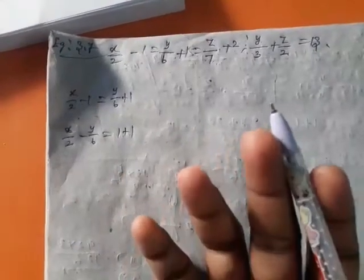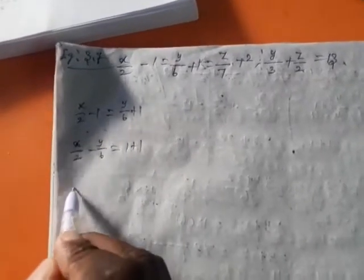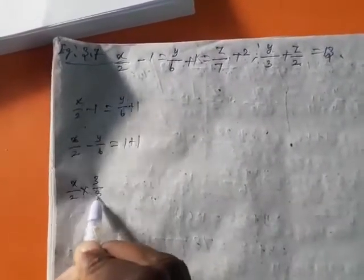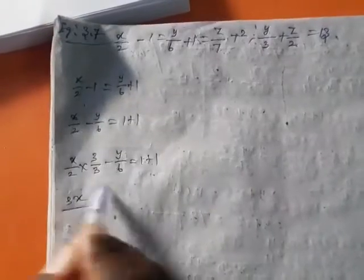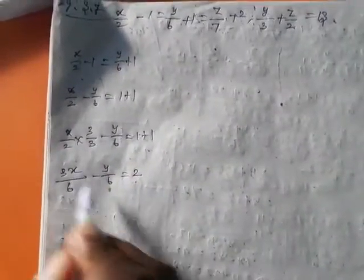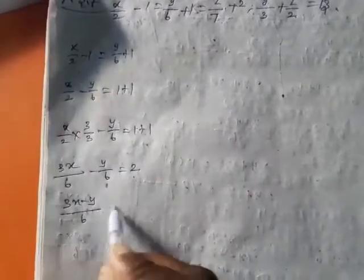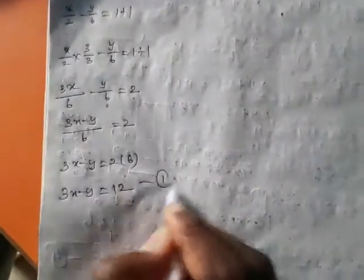LCM of 2 and 6 is 6. In the denominator 6: we have 3x minus y by 6 equal to 1 plus 1 is 2. So, 3x minus y equal to 2 into 6, which is 12. Take this as equation number 1: 3x minus y equal to 12.